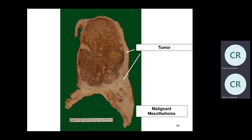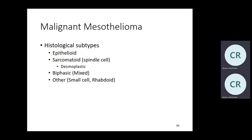Grossly: confluent gray-white nodular patches, usually in the lower lung and diaphragm, invading thoracic structures with pleural effusions. The pleura can be centimeter-thick — the lung cannot expand. Invasion into surrounding tissue is how you make the diagnosis. Two histologic types: epithelioid (most common — sheets and nests of polyhedral cells, looks like adenocarcinoma) and sarcomatoid (spindle cells in fascicles or storiform areas, much worse prognosis).